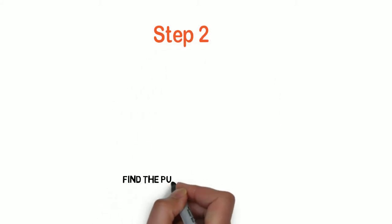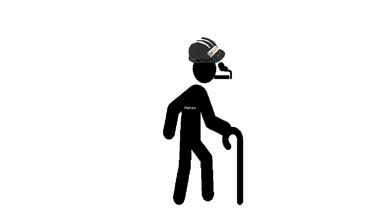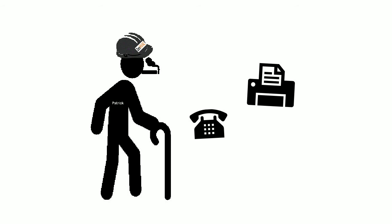Step 2: Find the pump performance curve online. Use your smartphone, go to your computer — all the manufacturers list these on their websites. Or, if you're Patrick and you still think it's 1986, you can hobble over to your desk phone, call up the pump manufacturer, and wait patiently by your fax machine. It's not 1986 anymore — use your smartphone.